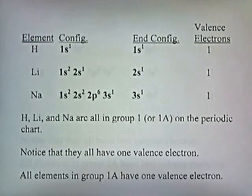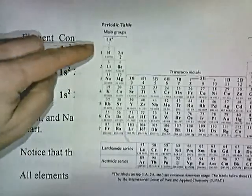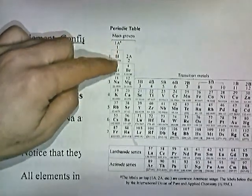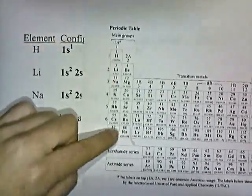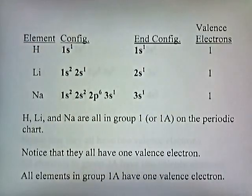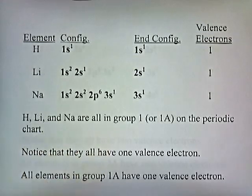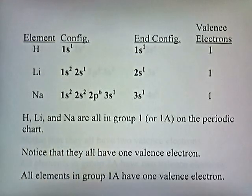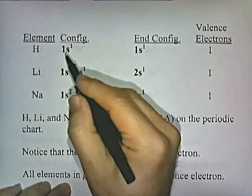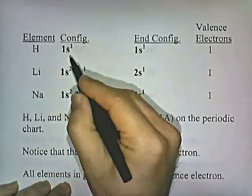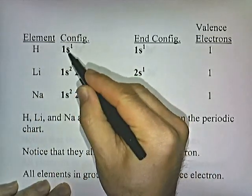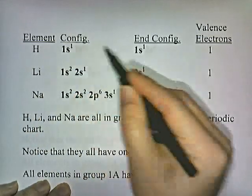Here are some electron configurations of group 1 elements — helium, lithium, and sodium. These are all in group 1A on the periodic chart, and notice that they all have one valence electron. All elements in group 1 have one valence electron. Here's the configuration of helium; it ends in S1, so one valence electron.